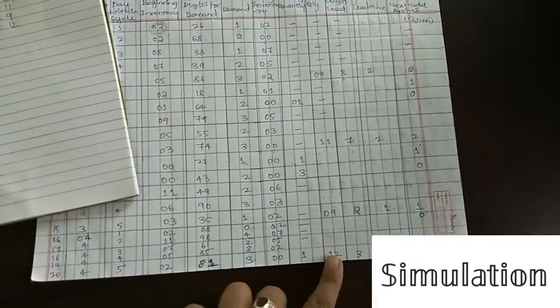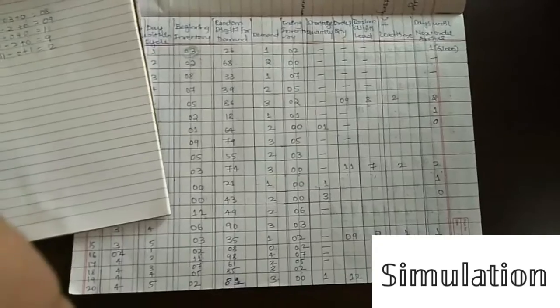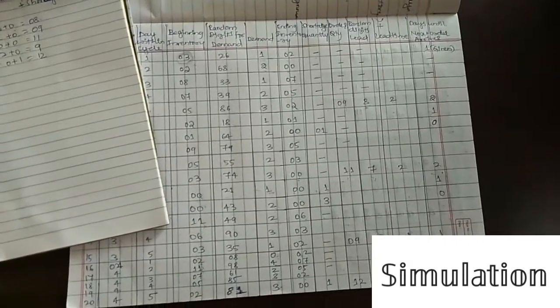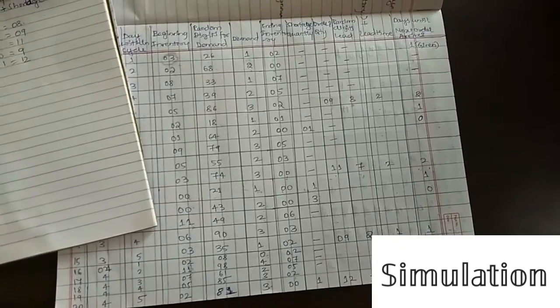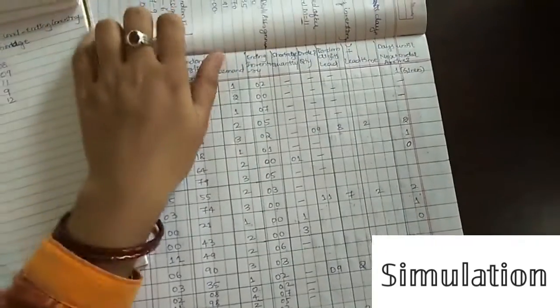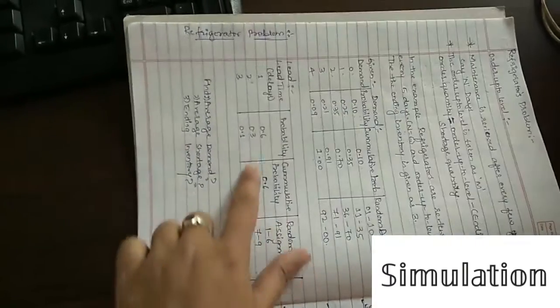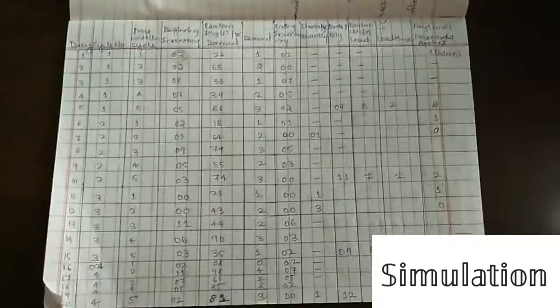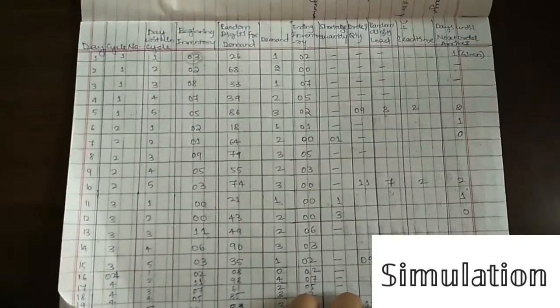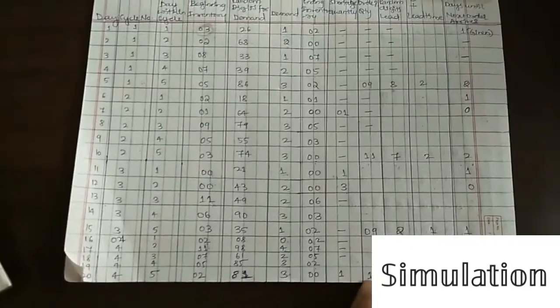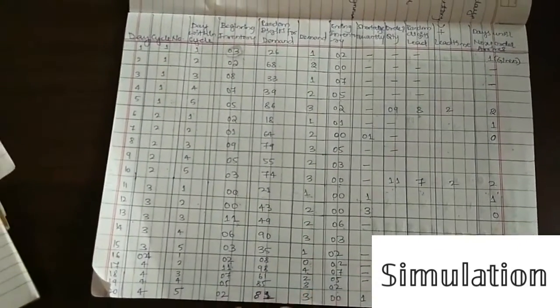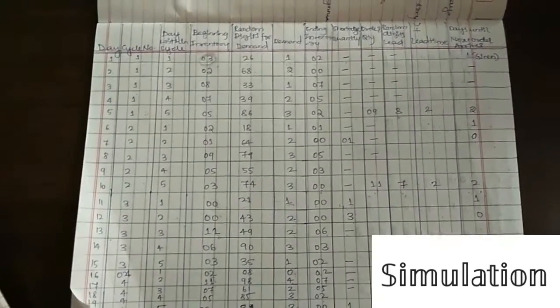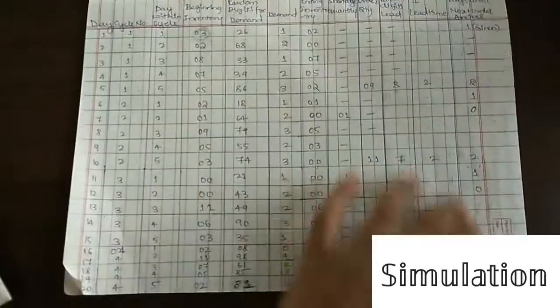The random digit for delay is 3, which lies in range 1–6, giving lead time of 1. So the order of 12 refrigerators will arrive after 1 day. This completes the fourth cycle; similarly the fifth cycle is done in the same manner.